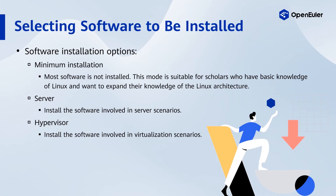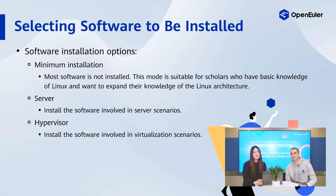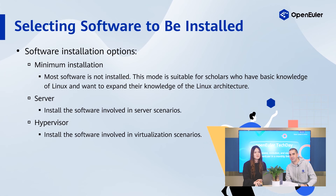Select the software to be installed. Open Euler 20.03 LTS supports three software installation options: minimum installation, server, and hypervisor. The server option means installing software for servers, and hypervisor means installing software in virtualization scenarios. For minimum installation, most software is not installed. This mode is suitable for those who have basic knowledge of Linux and want to expand their knowledge of the Linux architecture.